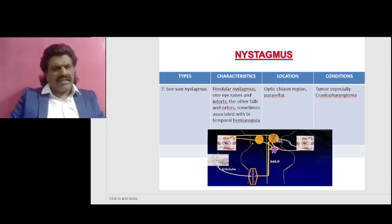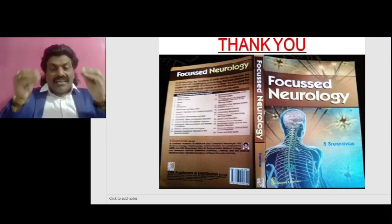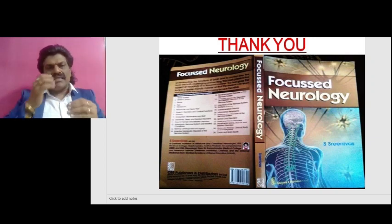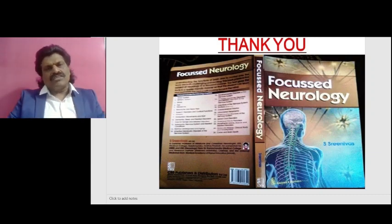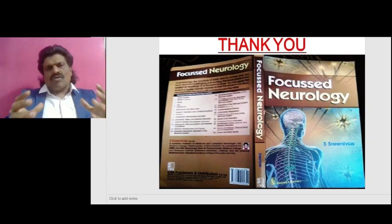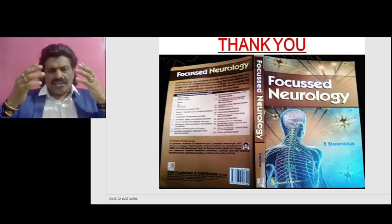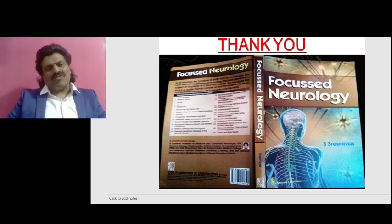With a simplified diagram we can understand the reason for seesaw nystagmus. We have seen an overview of all types of nystagmus, including the most challenging and fascinating seesaw nystagmus seen in parasellar lesions and mesencephalic-thalamic lesions. I hope you have enjoyed this video. These concepts are also in my book Focused Neurology, available online from Amazon. Please like, share, and subscribe to my YouTube channel Dr. Srinivas Medical Concepts and my Facebook page Dr. Srinivas Concepts. Thank you, bye.